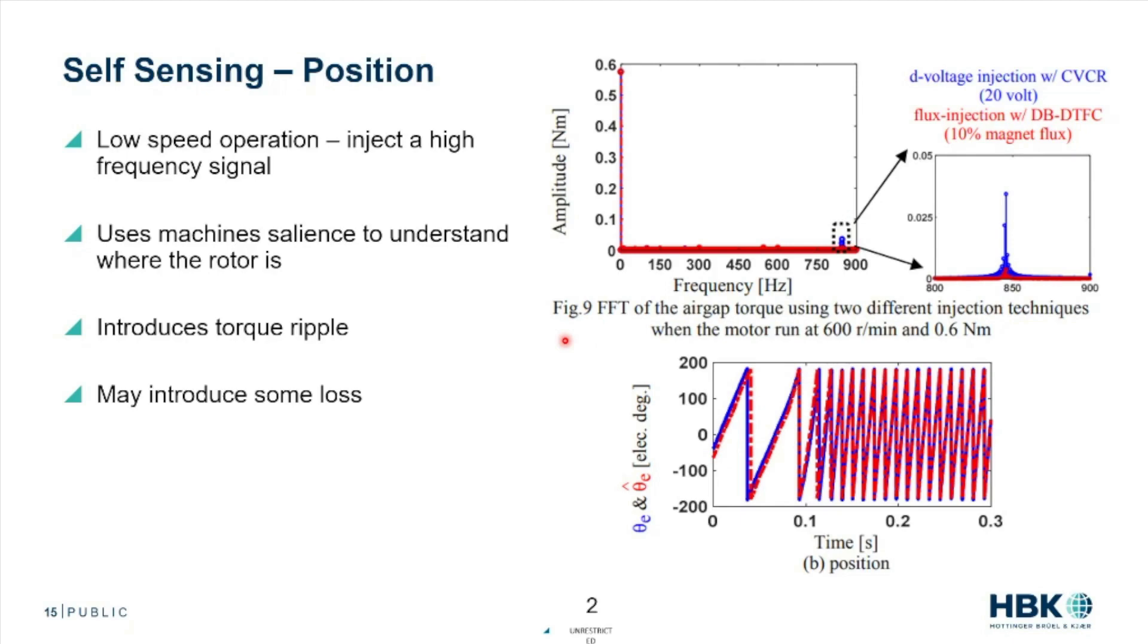And that gives us the ability to sense where the rotor is. This basically uses the machine saliency. We pulse the signal at the rotor, we read back what it's telling us. By injecting a high frequency or a harmonic injection, we can understand where that rotor is and gives us a lot of tools for controlling and predicting what the machine is going to do.